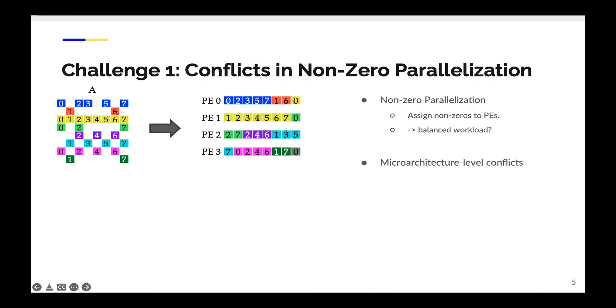To parallelize the processing of non-zeros and balance the workload, one popular scheme is non-zero-based parallelization. The idea is that we assign the non-zeros equally to PEs as shown in this figure. It seems that this scheme balanced the workload between PEs. Actually, it is not because this scheme leads to microarchitecture level conflicts. The first one is the row accumulation conflict. That is because of the latency of floating point addition by DSPs. Here, we assume it takes four cycles for DSPs to perform a floating point addition. For the example of the accumulation of the blue elements, between two blue elements, it will insert three cycles. That is inefficient.